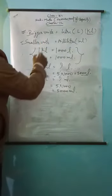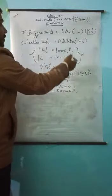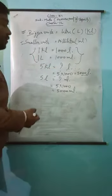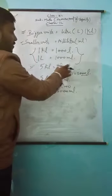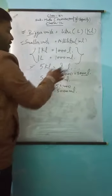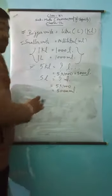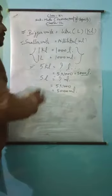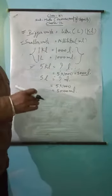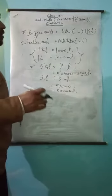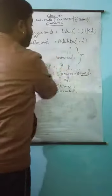Kilo liter is a bigger unit and liter is also a bigger unit. When converting into liters or when they say convert into milliliters, we use this formula. This formula is for converting a bigger unit into a smaller unit.